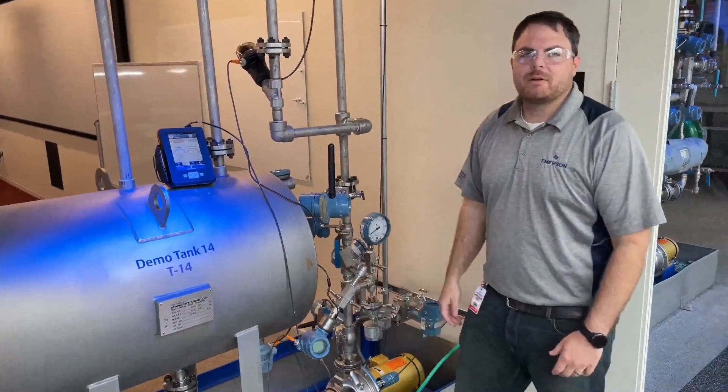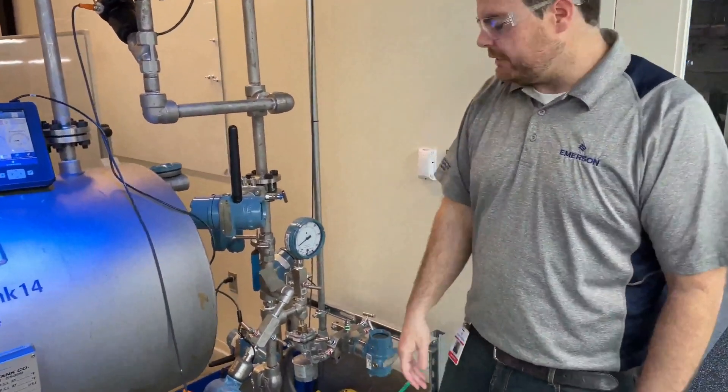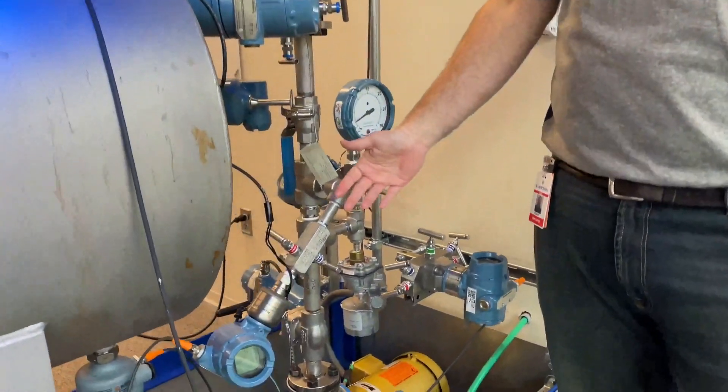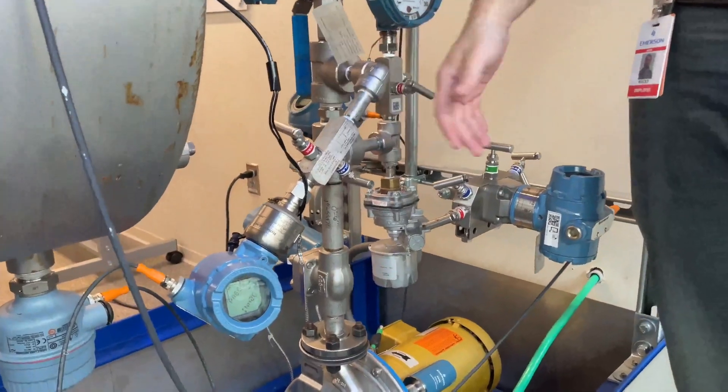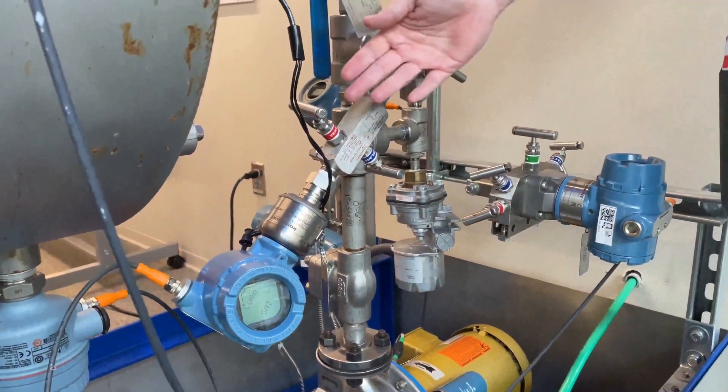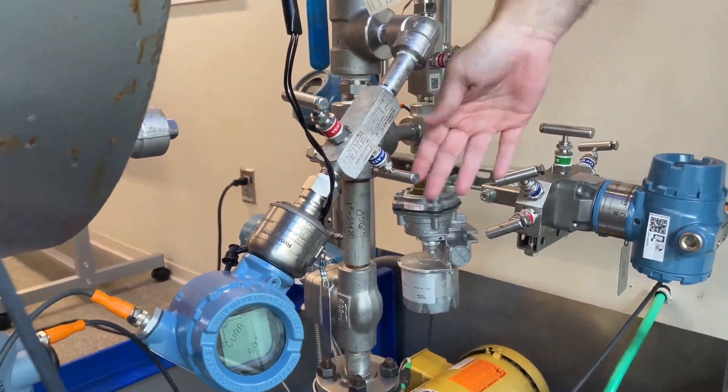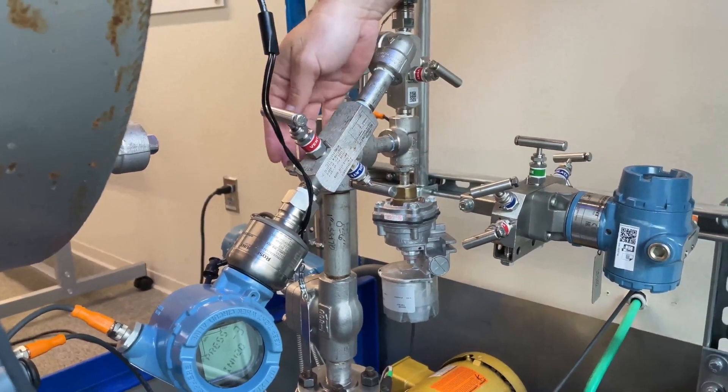All right, welcome back. We now have our transmitter installed out in the field. As you can see, we have now mounted it upside down. We're using that two valve manifold to make sure you can isolate and vent using a vent plug.